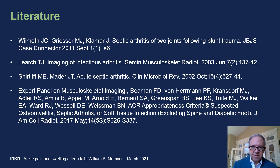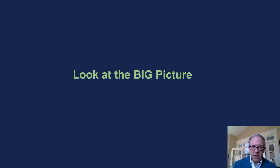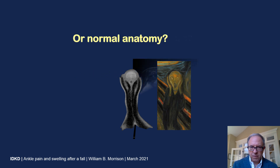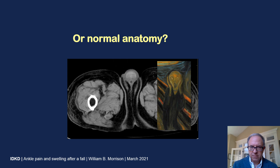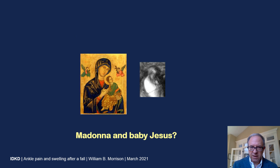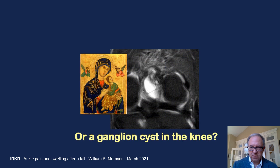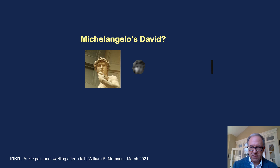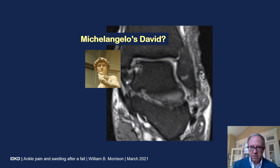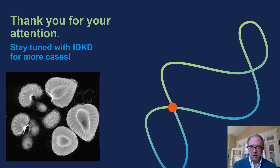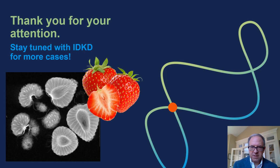Here's the literature describing septic arthritis after blunt trauma and in other situations. I encourage you always to look at the big picture — is this 'The Scream' by Edvard Munch, or is it normal anatomy? Is this Madonna and Baby Jesus, or is it a ganglion cyst of the knee? Is this Michelangelo's David, or is it an osteochondral lesion of the talus? Thank you for your time and stay tuned for more IDKD cases.